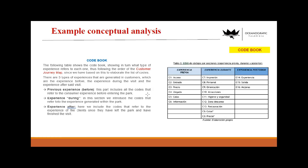Now I'm going to give you some examples of what previous student groups did. One group working with an oceanographic park considered, as usual, the customer journey map with before, during, and after. But instead of just those three, they created a second level of codes. For example, under 'before' they considered elements like access, entry, price, arrival, queue, and information. Under 'during': personal orientation, attractions, whatever. And 'after': experience, improvement, checkout, going out from the park.